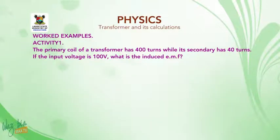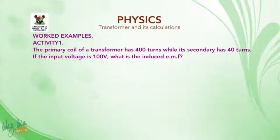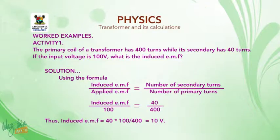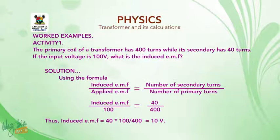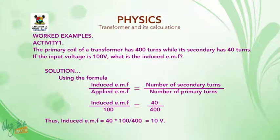Worked Example — Activity 1. The primary coil of a transformer has 400 turns while its secondary has 40 turns. If the input voltage is 100 volts, what is the induced EMF? Solution: Using the formula, induced EMF V2 over applied EMF V1 equals number of secondary turns N2 over number of primary turns N1. Therefore, V2 over 100 equals 40 over 400. Thus, induced EMF equals 40 times 100 divided by 400, which gives us 10 volts.